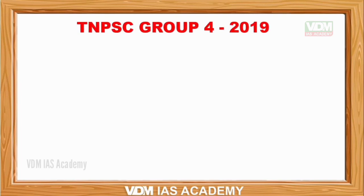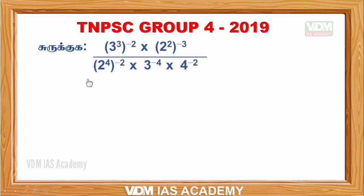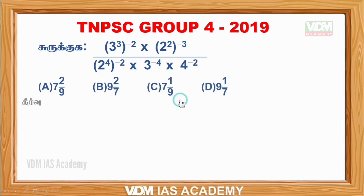On a conference, TNPSC Group 4, I will tell you a simplification problem. The problem is: 3 cube whole power minus 2, into 2 square whole power minus 3, divided by 2 power 4 whole power minus 2, into 3 power minus 4, into 4 power minus 2. So the sum is solved.